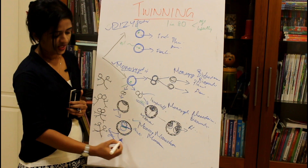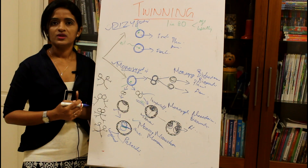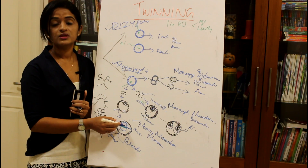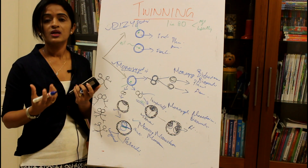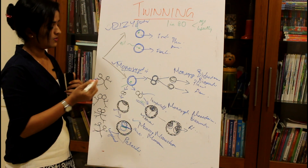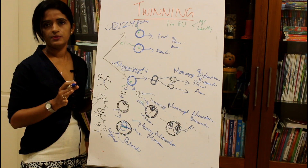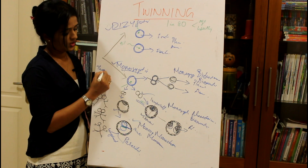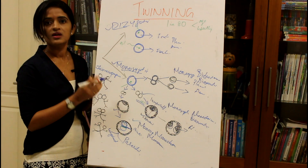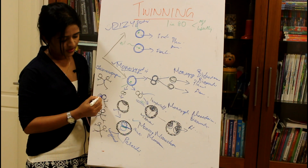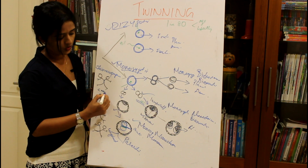In monozygotic monochorionic twins, there are two further varieties: conjoint twins and parasitic twins. Conjoint twins occur when the bilaminar germ disc does not separate completely. Sometimes the thoracic region remains fused — this is called thoracopagus. If only the heads are fused, it is called craniopagus.